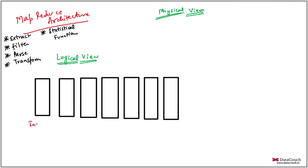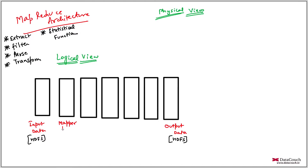In the logical view, let's say this is our input data and this is our output data. Both input data and output data are stored in HDFS. We are storing them in HDFS because we want the data to be there for the long term. HDFS provides fault tolerance and horizontal scalability, which is why input and output data are both stored there.